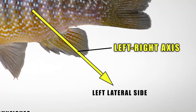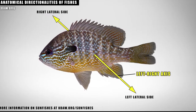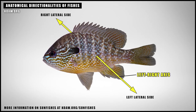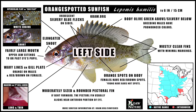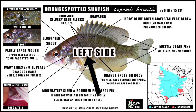Left-right axis, or lateral axis. Each sunfish has two mostly symmetrical lateral sides — a left side and a right side. We biologists prefer showing the left side of a fish in our field guides, where the tail will be on the right and the head will be on the left.